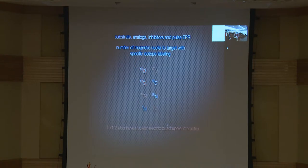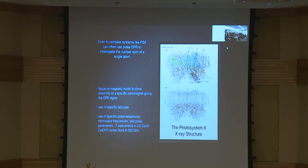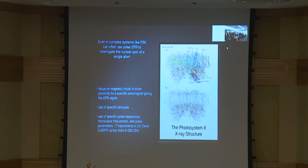We have nuclear isotopes that have magnetic moment. The ones that are spin greater than one-half, like N-14 shown here in orange, have an additional interaction called the nuclear electric quadrupole interaction — we'll look at that specifically for N-14. The nice thing about pulse EPR in the modern world is that even for complex systems like PS2, we can often use pulse EPR to look at a single nuclear spin. We focus on magnetic nuclei that are close to a specific paramagnet giving rise to EPR signal, refine things using specific isotopes, and tune in for specific couplings using different pulse sequences, microwave frequencies, and pulse parameters. We're well equipped at Davis for that.